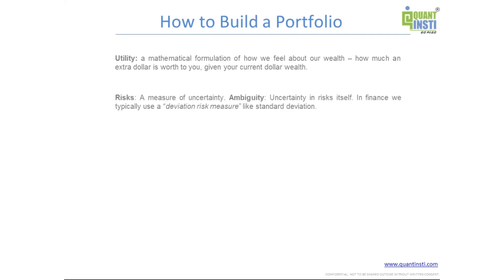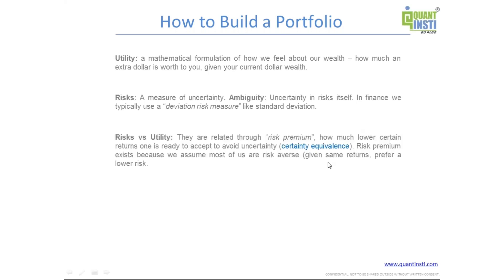Whereas risk is a measure of uncertainties. Now in many different streams of work, we define uncertainties in many different terms. For specific to finance, we typically talk about risks as something what you call the deviation risk measures. In particular, the standard deviation. Standard deviation, I'm sure most of you are already aware of, is basically the square root of the second moment of the distribution. And these two things, they are very intricately related. And the relation is what we called risk premium.